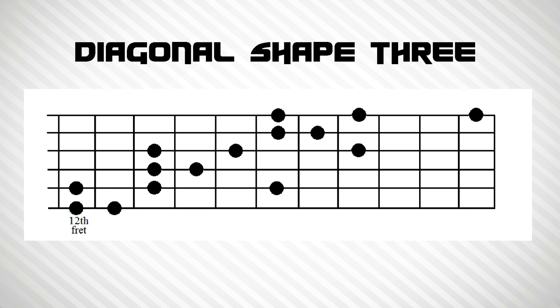This is the final diagonal shape, and it's the insane scale again, starting on fret number twelve, and going all the way up to fret number twenty-two.